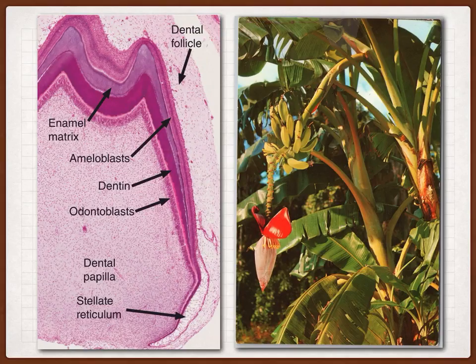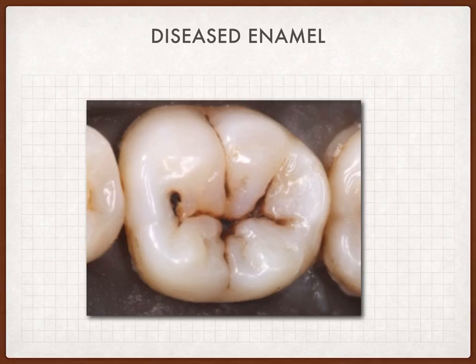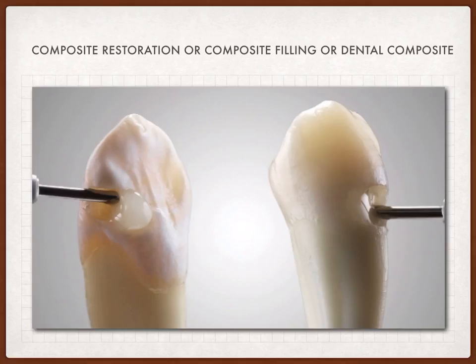And that leads us to one thing: if diseased enamel is present, that means we have an irreversible disease. That will necessitate replacing the diseased part of the tooth with something called a restoration — for example, composite restorations or amalgam restorations.